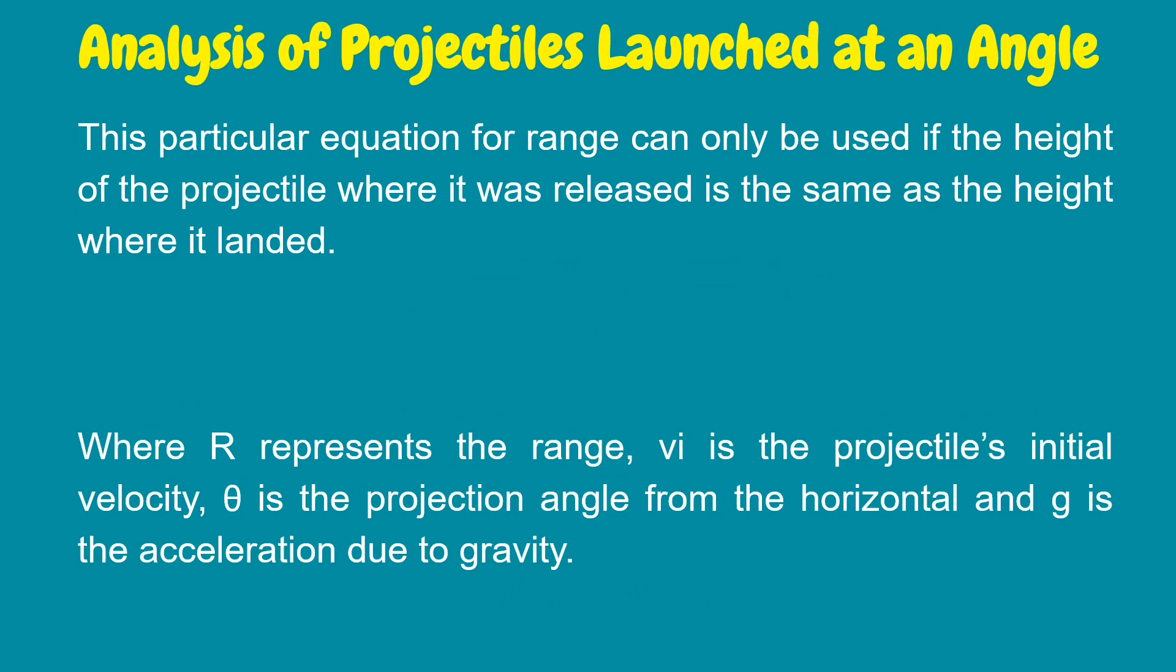This particular equation for range can only be used if the height of the projectile where it was released is the same as the height where it landed. Where r represents the range, v sub i is the projectile's initial velocity, theta is the projection angle from the horizontal, and g is the acceleration due to gravity.